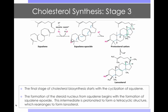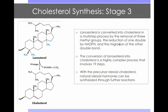The final stage of cholesterol biosynthesis starts with the cyclization of squalene. The formation of the steroid nucleus from squalene begins with the formation of squalene epoxide. This intermediate is protonated to form a tetracyclic structure which rearranges to form the compound lanosterol. Lanosterol is converted into cholesterol in a multi-step process by the removal of three methyl groups, the reduction of one double bond by NADPH, and the migration of one other double bond. The conversion of lanosterol into cholesterol involves 19 steps.